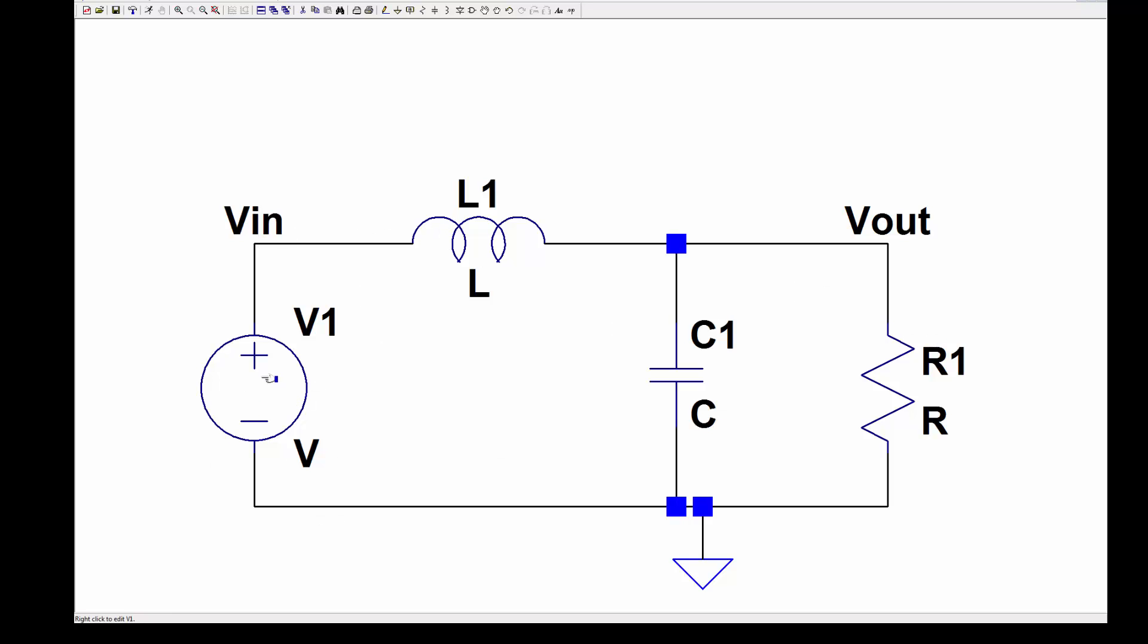Now this is not, you've got to specify these, so we want this to be 100 micro Henry, and that's it. And this, I want it to be, right-click it, and that's going to be 100 micro Farad. And then the load we had is 1K.